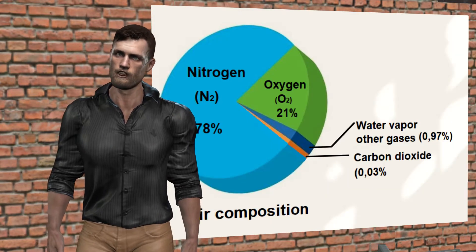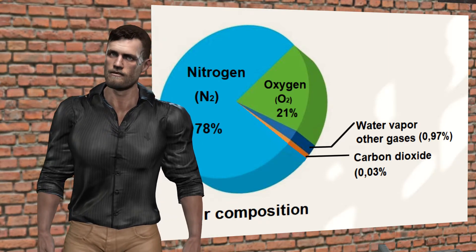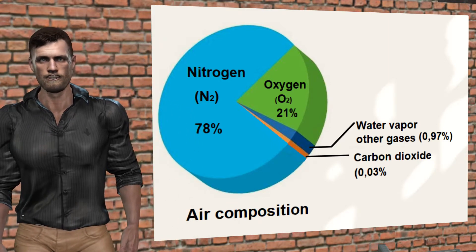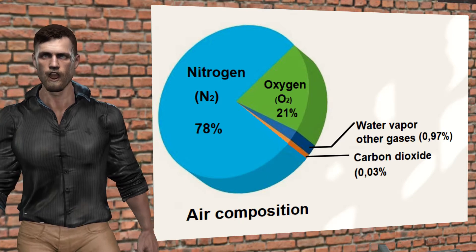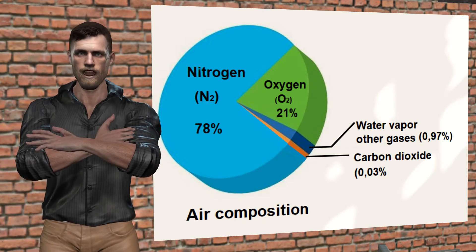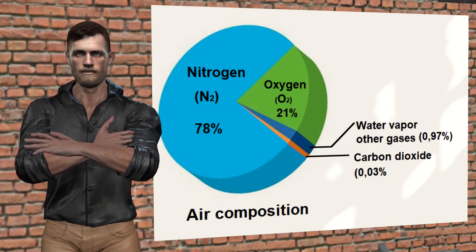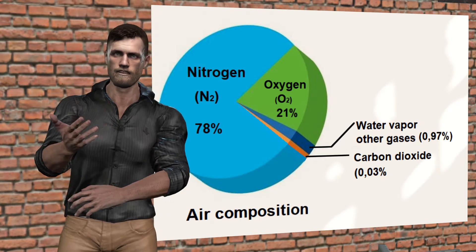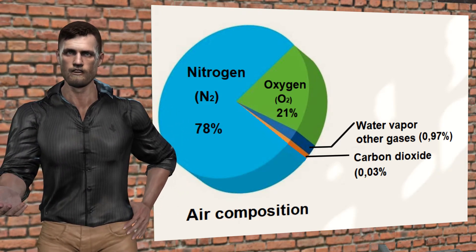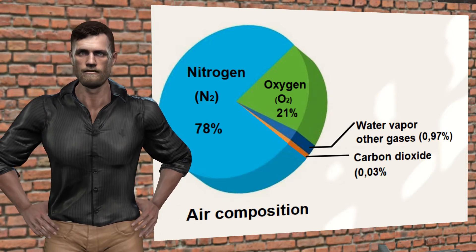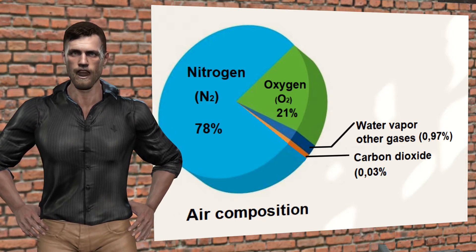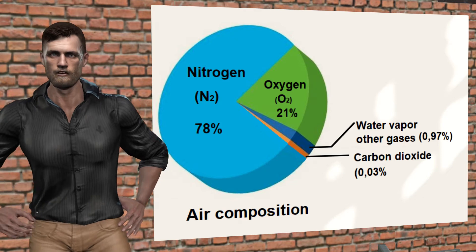The air we breathe is a mixture of different gases, among which is the oxygen that we need for the activity of the cells of our body. However, oxygen is not the gas that is in the highest proportion in the air. As we can see in the graph, air is made up of approximately 78% nitrogen, 21% oxygen, and in a lesser proportion, noble gases, water vapor and carbon dioxide.